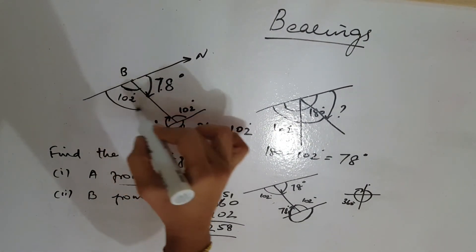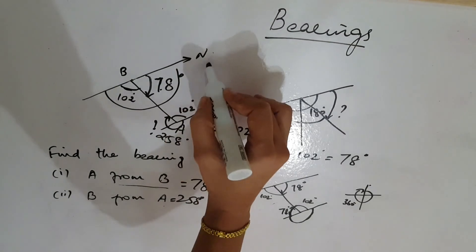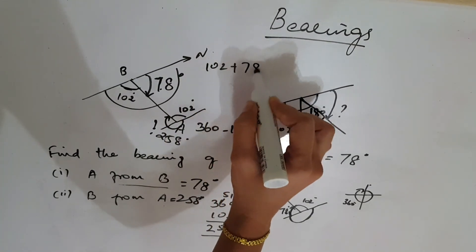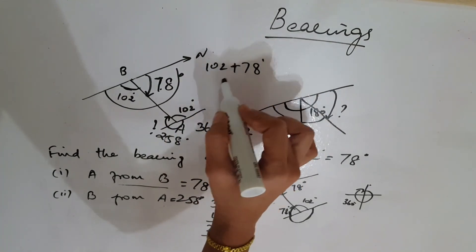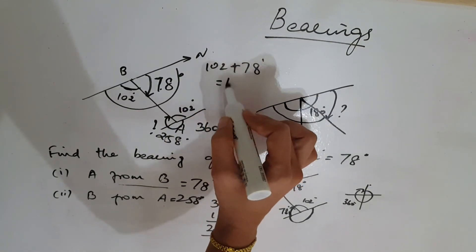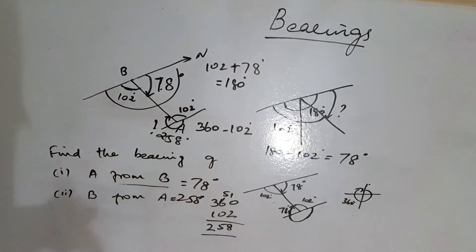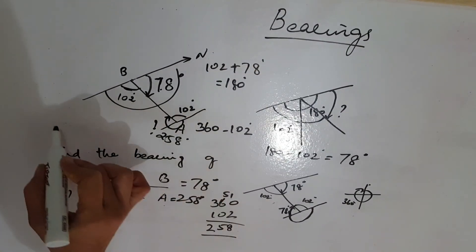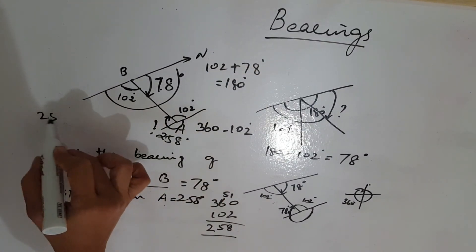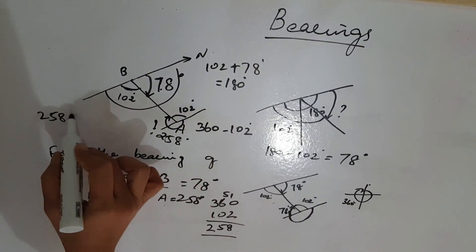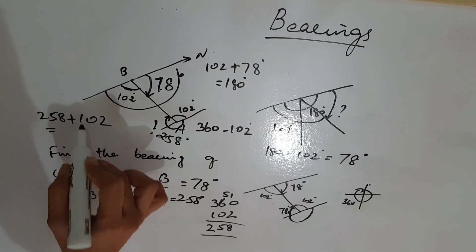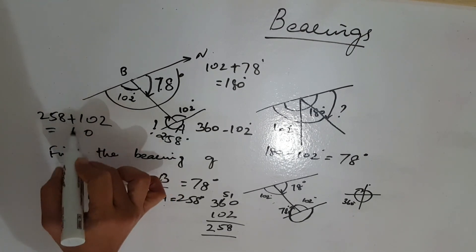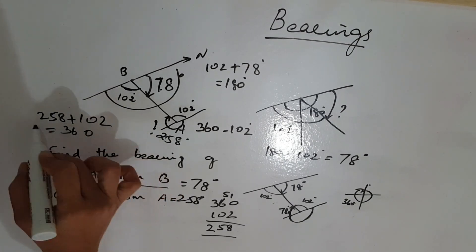After that, you can add to cross verify the answer: 102 plus 78 gives 180. You can also add 258 plus 102 — 360 comes. This whole thing verifies correctly.